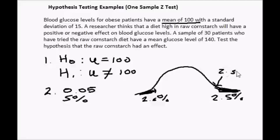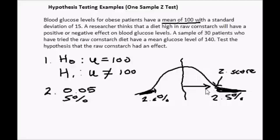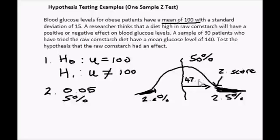We want to find the z-score at the boundary of the rejection region. Using a right-hand z-table, which gives us the area from the mean to any z-score, one half of the bell curve is 50 percent. The tail area is 2.5 percent, which means the area between the mean and this z-score must be 47.5 percent. So I'll look up the decimal 0.475 in the z-table.